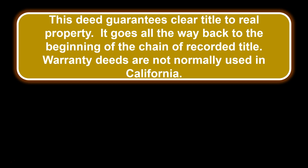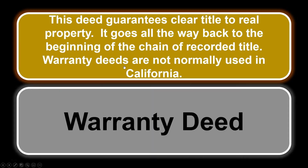This deed guarantees clear title to real property going all the way back to the beginning of the chain of recorded title. Warranty deeds are not normally used in California because it's really hard to guarantee clear title all the way back to the beginning of the chain of recorded title. So this is a warranty deed. There's also a special warranty deed that only goes back to when the conveying person obtained the property, but here we're talking about a warranty deed, not normally used in California.